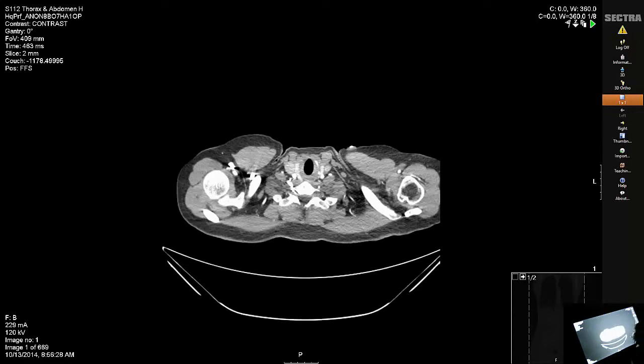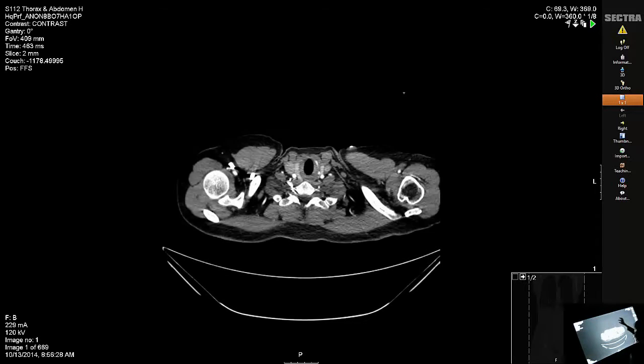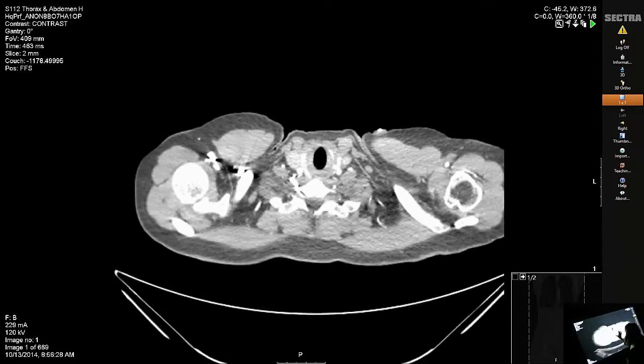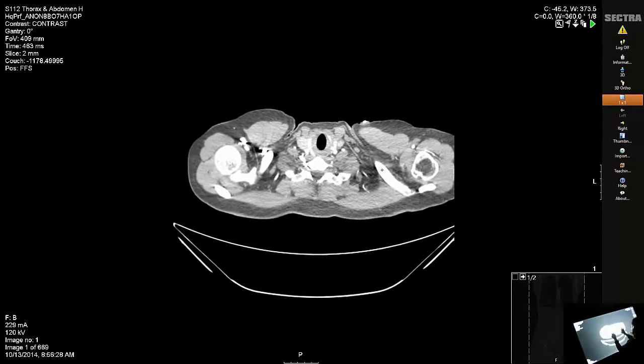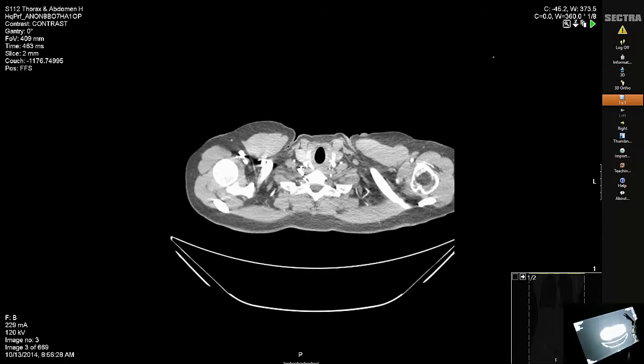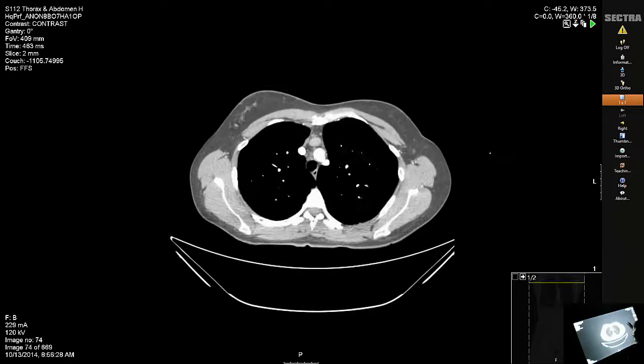While I'm in the 2D cross-section mode, there are a few tools that I can use, one of which is the windowing tool, so I can adjust the window of my scan. I can also zoom in or out, pan the image, and of course I have the capability to scroll through the data set.